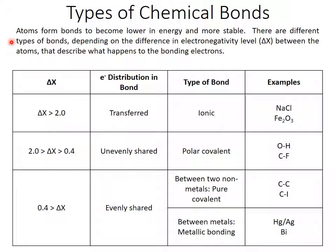There are different types of bonds, and the type of bond that forms depends on the difference in electronegativity level between the atoms. That tells us what exactly is happening to those bonding electrons.